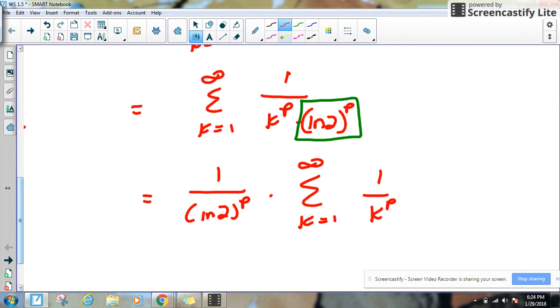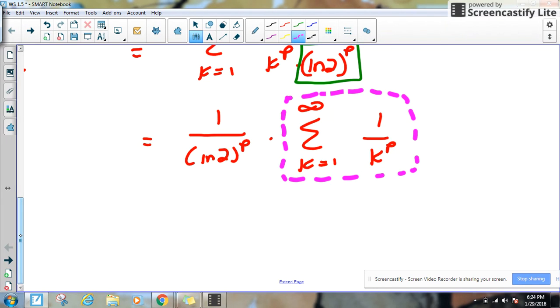And now this, this right here, this looks really familiar. This is actually going to be a p series, right? And in class, we did learn that if p is greater than 1, our series is actually going to converge. And so what we know is that this series right here converges because it's a p series.